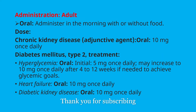For administration in adults, we can administer it with or without food. It is an oral medication dosed at 10 milligrams in patients who have chronic kidney disease, and also in diabetes with heart failure, we give 10 milligrams once a day. In diabetic kidney disease, we also give 10 milligrams once a day. However, if the patient has only diabetes without heart failure or diabetic kidney disease, we can initiate at 5 milligrams, monitor glucose control, and increase the dose up to 10 milligrams once daily over 4 to 12 weeks.